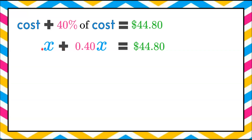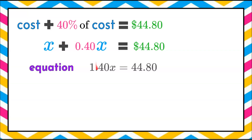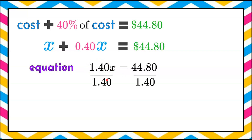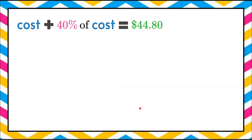Adding those together — there's an invisible 1 in front of x — so 1 plus 0.40 gives 1.40x equals 44.80, which is what he sold the jacket for. To solve, divide both sides by the coefficient 1.40. Since 1.40 divided by 1.40 is 1, we're left with x. And 44.80 divided by 1.40 gives x = 32. So it cost him $32 to make the jacket.